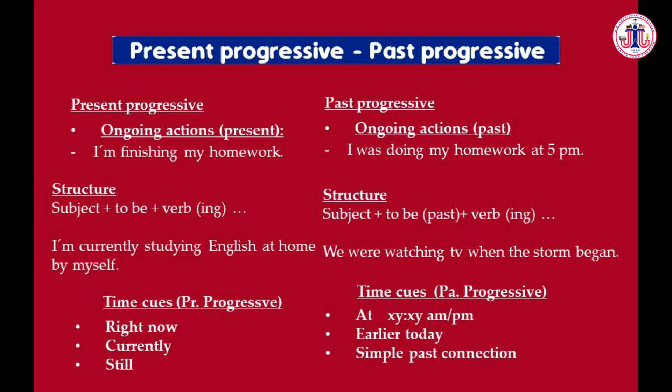The structure of the past progressive is very similar: subject + verb 'to be' in the past + verb with -ing. For example: 'We were watching TV when the storm began.' Here, 'we' is the subject, 'were' is the verb 'to be' in the past, and 'watching' is the verb with -ing. The past progressive needs a specific time cue — in this case, 'when the storm began.'